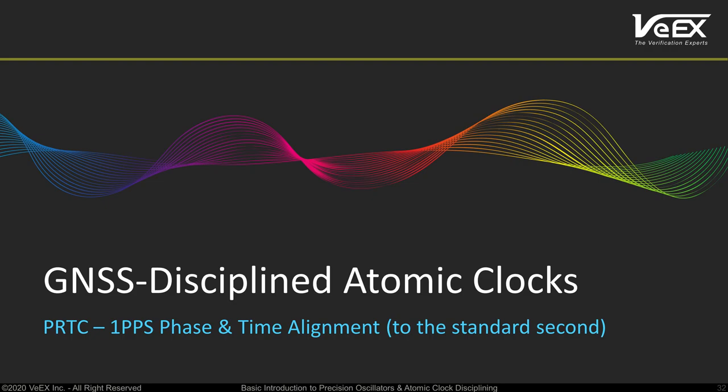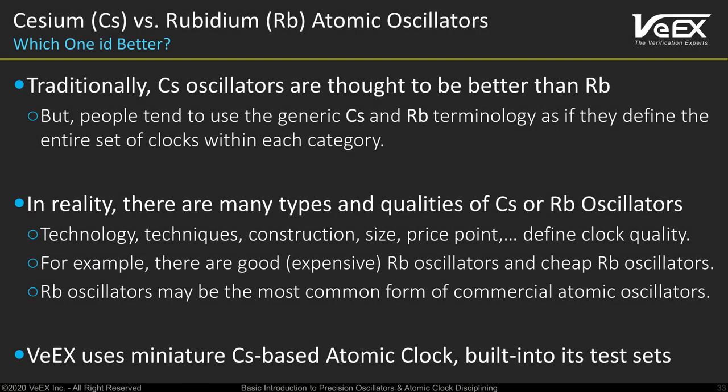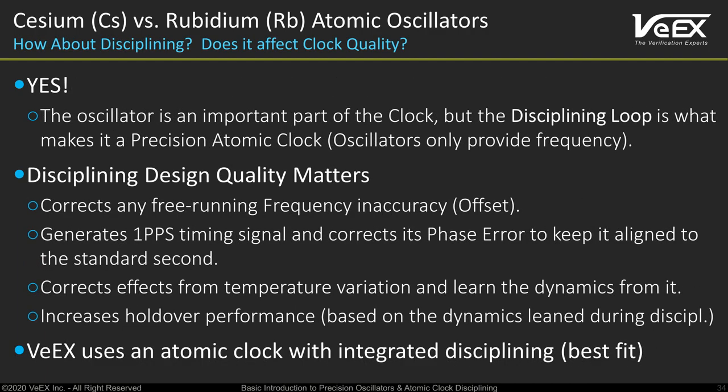Now that we know how an accurate frequency source is produced, let's focus on generating a 1 pps time reference signal with its rising edge aligned to the standard second — that is, a primary timing and time reference clock source, or PRTC. People often use 'rubidium clock' as a generic term, as if they were all the same quality. In reality, there are big expensive accurate atomic clocks and small miniature atomic clocks with certain compromises. CS or RB are not enough to describe atomic clocks — we must refer to their specifications. Many miniature rubidium oscillators don't have built-in discipline loops, so one has to be built around them to make a clock.